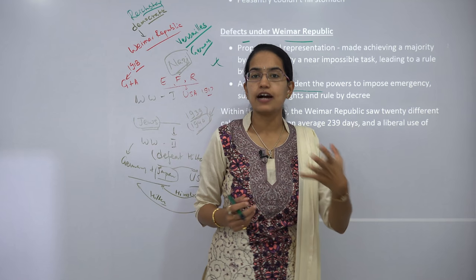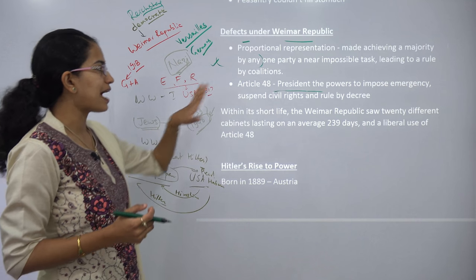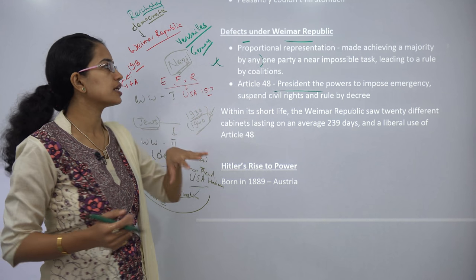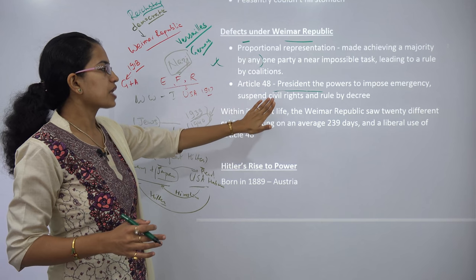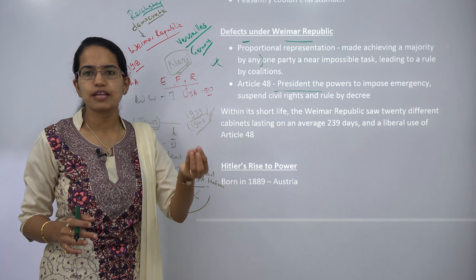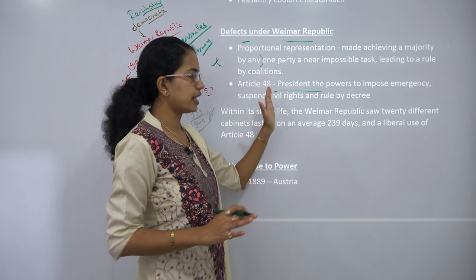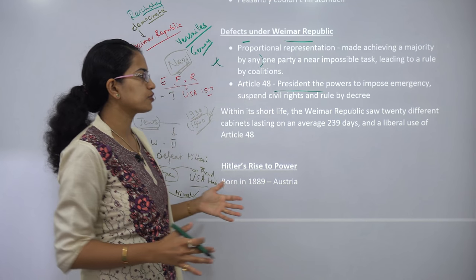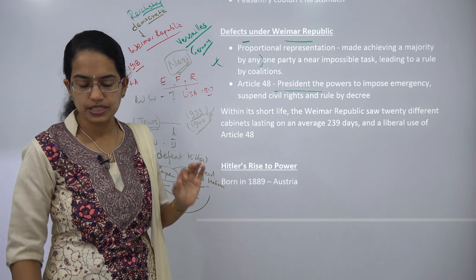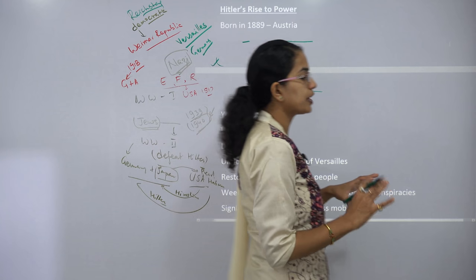People started pointing out the defects of the Weimar Republic. The idea of proportional representation made achieving a majority by one party nearly impossible. Within a short time, the Weimar Republic saw 20 different cabinets, each lasting less than a year. Finally, they were liberally using Article 48, which gave the President the power to impose emergency. Once emergency was imposed, all civil rights would be suspended and rule by decree would be established.